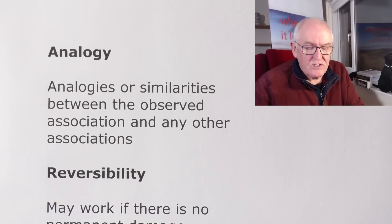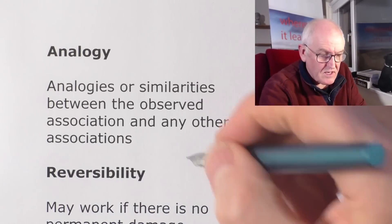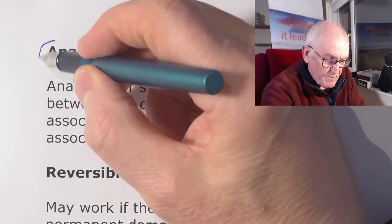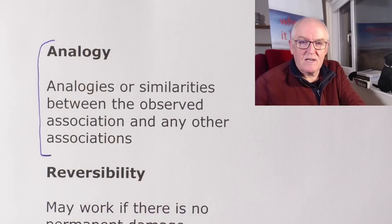Analogy: similarities between the observed association and any other associations. People that are dying now — for example, one of the things people are dying of is heart disease. Are there other things that can cause heart disease and produce similar manifestations to what we're seeing? There are. These can be taken in context with the other Bradford Hill criteria, and causes could be isolated — if only this work was being done by our authorities.